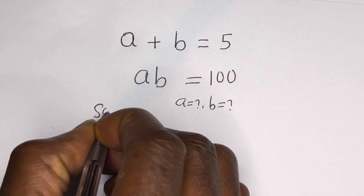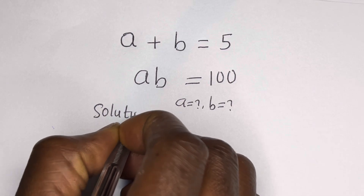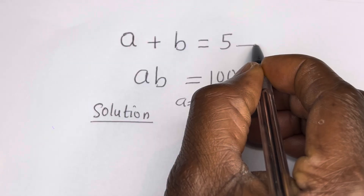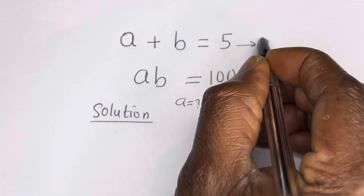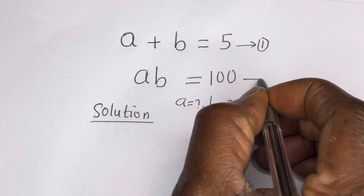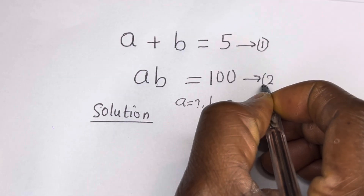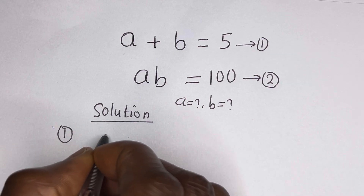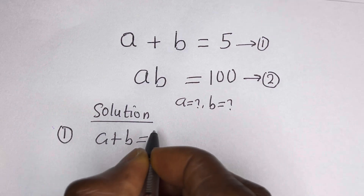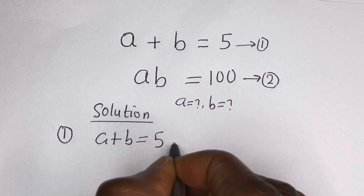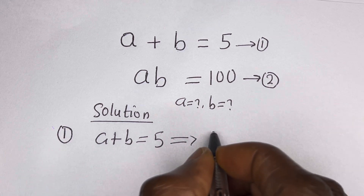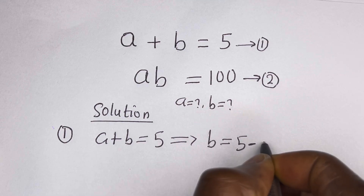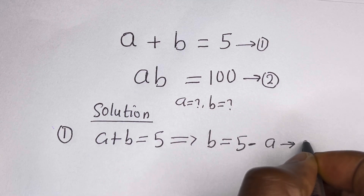Solution. A plus B is equal to 5, let us call this equation 1. AB is equal to 100, let us call this equation 2. From equation 1, A plus B is equal to 5, therefore B is equal to 5 minus A, let us call this equation 3.